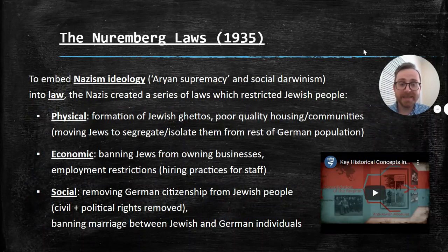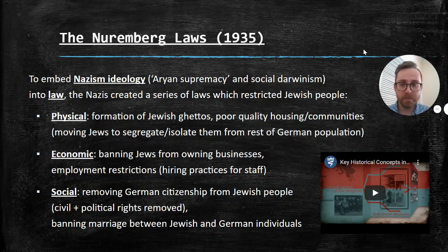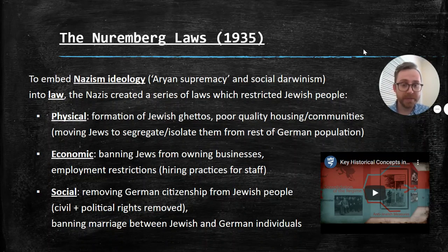We'll also reflect on how the Nazi regime used the Nuremberg Laws as a tool of control and terror in the lead-up to the Holocaust. To embed Nazi ideology — this idea of Aryan supremacy, pure Germans versus the rest, and social Darwinism, the idea that some humans, namely Jews, are less evolved than these pure Germans — to put that belief of the Nazi party into law, to make it real and legal and binding, the Nazis created a series of laws designed to restrict Jewish people in basically three ways.